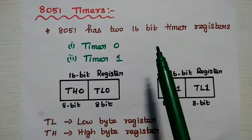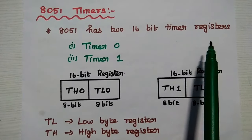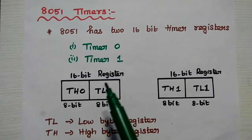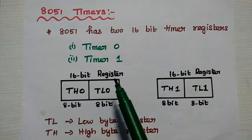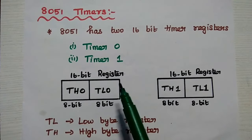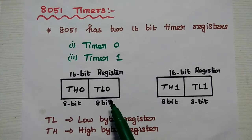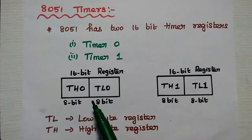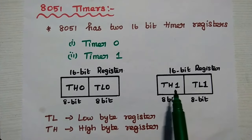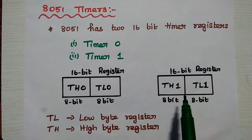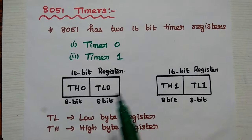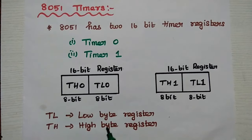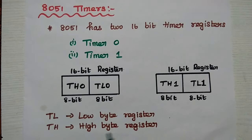AT51 has two 16-bit timer registers: Timer 0 and Timer 1. Each is a 16-bit register consisting of two 8-bit registers — TH0 and TL0 for Timer 0, and TH1 and TL1 for Timer 1. Each 8-bit register can store low byte data as well as high byte data.